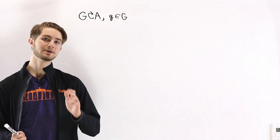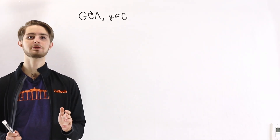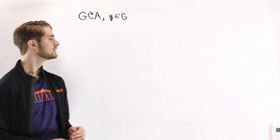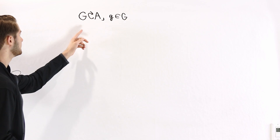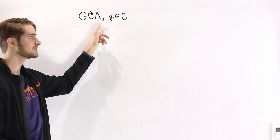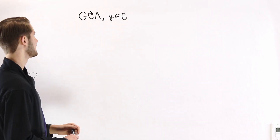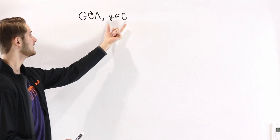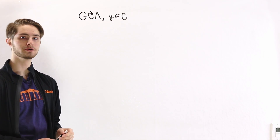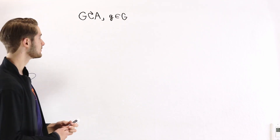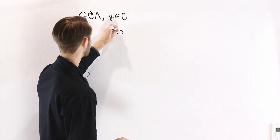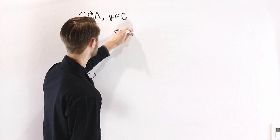We are going to talk about Cayley's theorem using group actions. Suppose we have a group G acting on some set A and we have an element g from the group. The first thing we're going to do is consider the map σ.